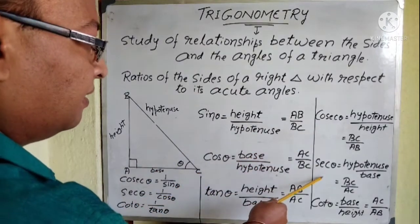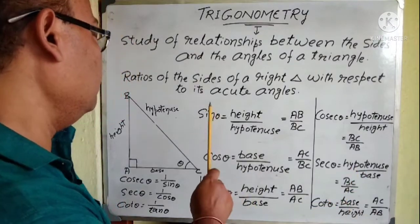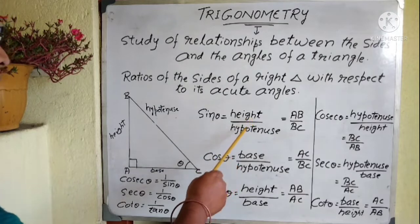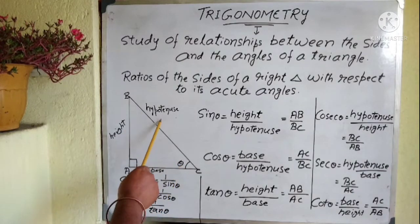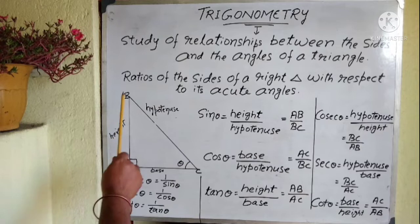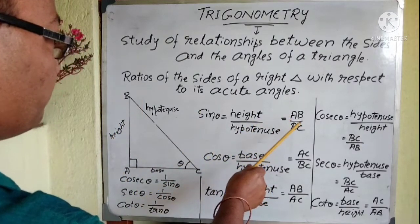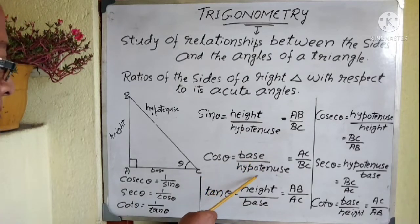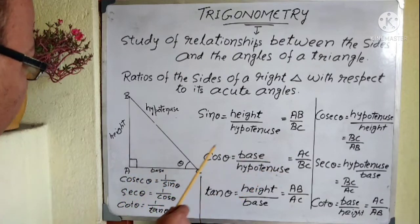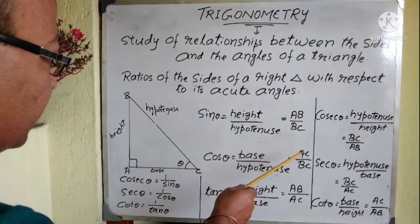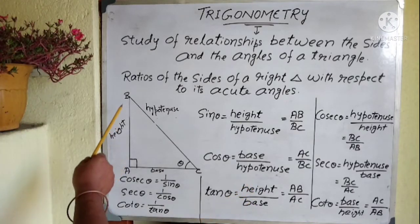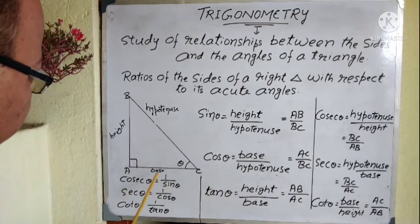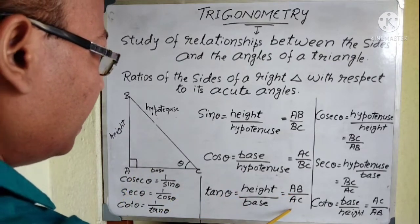We have to concentrate on six trigonometrical ratios: sine theta, cos theta, tan theta, cosec theta, sec theta, and cot theta. Sine theta is equal to height by hypotenuse, so that is AB by BC. Cos theta is base by hypotenuse, so AC by BC. And tan theta is equal to height by base, so AB by AC.